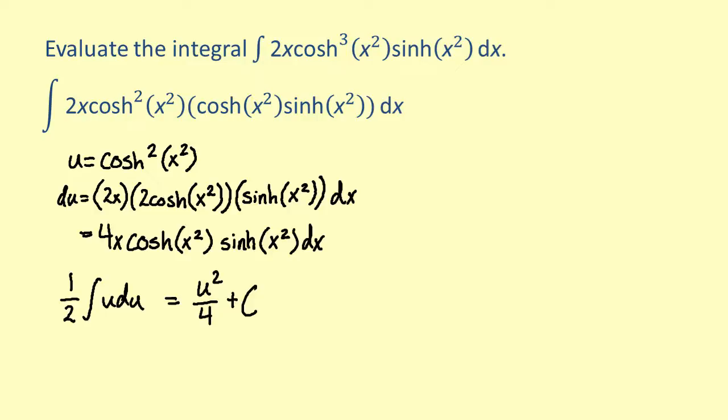Finally, substituting the hyperbolic cosine of x squared for u, we get the hyperbolic cosine to the fourth of x squared over 4 plus c.